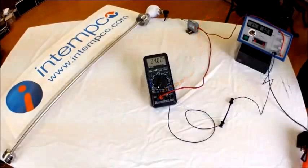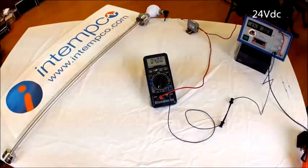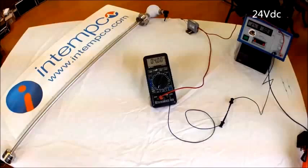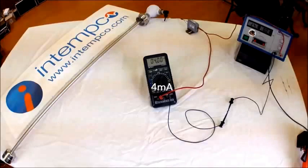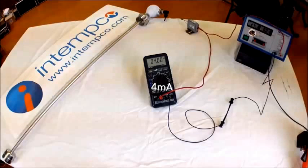We are starting with the power supply set to 24 volts and sensor all the way at the bottom. As you can see, the current indicated is 4 milliamps. This indicates the float is at the bottom of the sensor span.